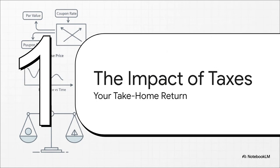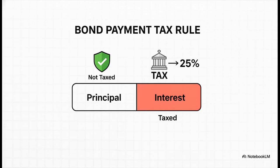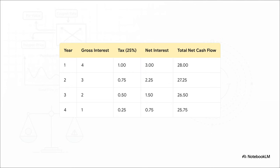In the real world, you can never forget about taxes. And yep, bond interest is taxable. So for our next step, we have to figure out the net cash flow to find our real take-home return. The rule for our case is pretty straightforward. There's a 25% tax, but it only hits the interest we earn each year. The principal repayment, that's just you getting your own money back, so it doesn't get taxed. Let's see how this plays out.